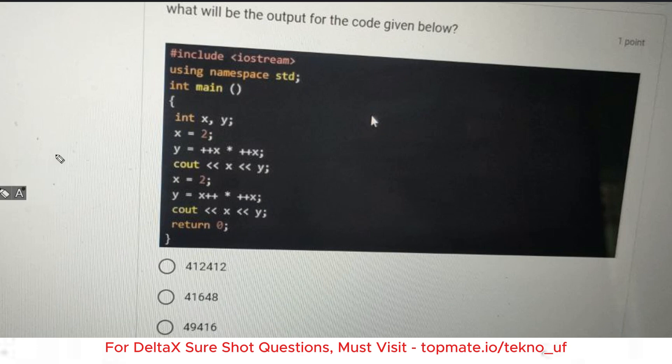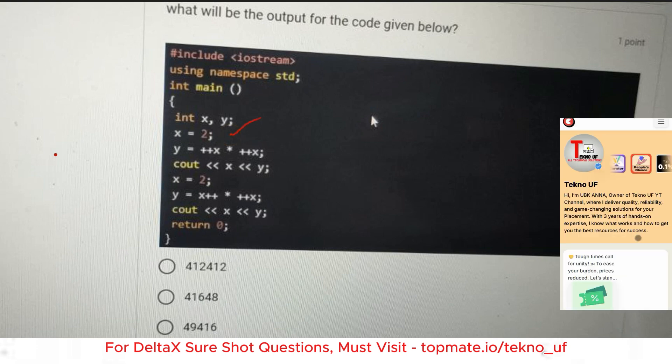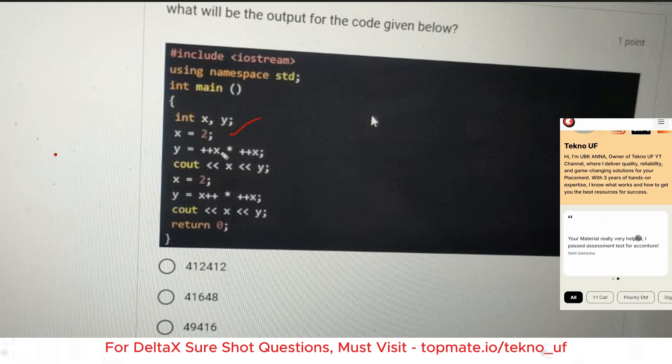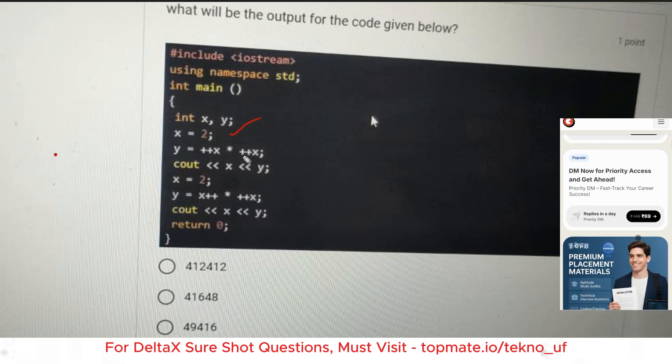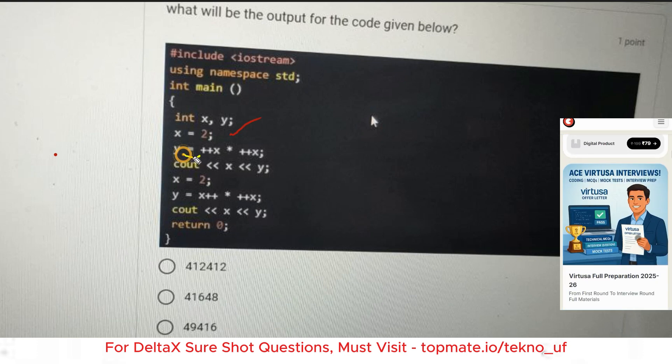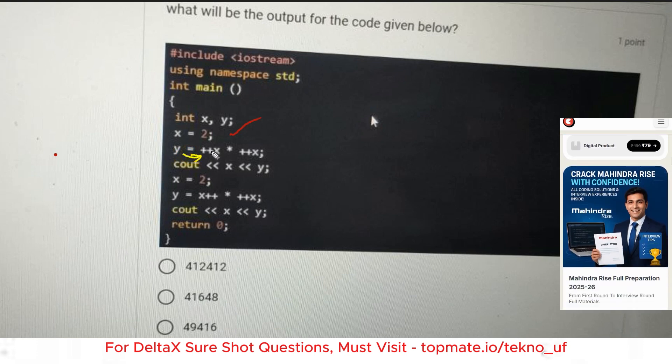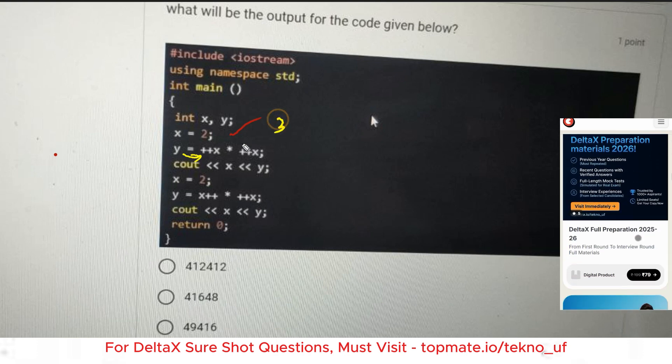I hope you have paused. Let me give the answer. So int x and y, then x, the value of x and y are initialized like this. The value is initialized with the post and pre-increment operators. Now let me just calculate. X is equal to 2. Now y is equal to plus plus x, so at first it is incremented.